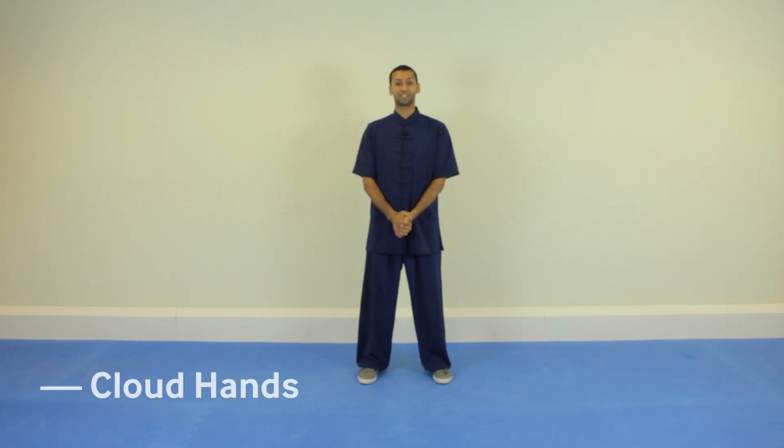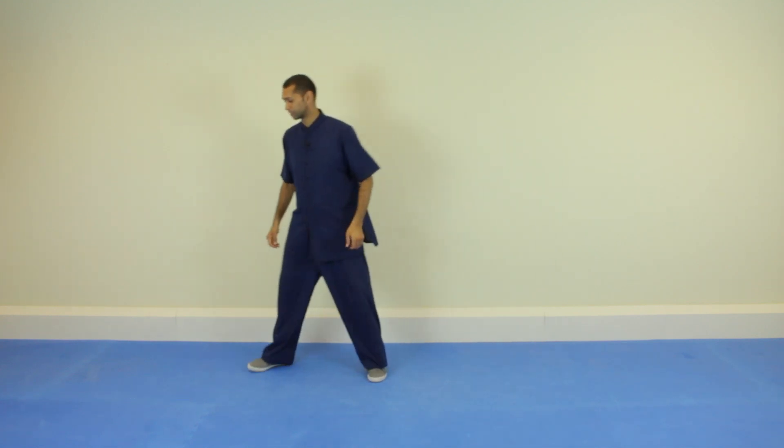Hi, this is Amir Rafi from Tai Chi School. In this video, we're going to look at cloud hands in the Lao Jawa form in the second section, so from single whip. So I'll demonstrate this first.